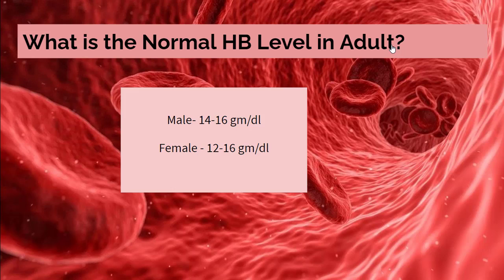What is the normal hemoglobin level in adults? In males, it is 14 to 16 grams per dL. In females, it is 12 to 16 grams per dL.